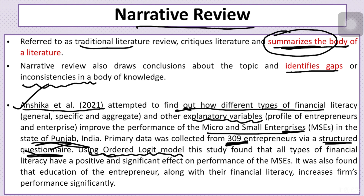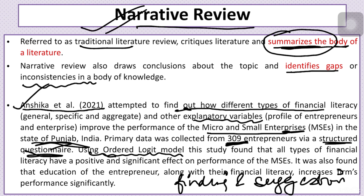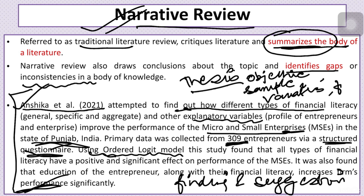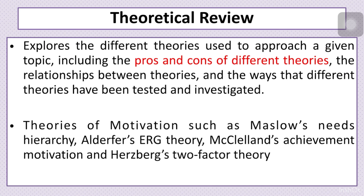Finally, we summarize the findings and suggestions. This type of literature review is commonly used in writing a thesis — it covers everything: objective, sample, variables, findings, and suggestions. The next type of literature review is the theoretical review.